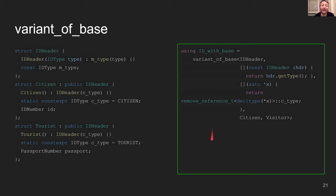There's a question about constexpr lambdas. In C++14, even if you don't explicitly say a lambda is constexpr, it can behave as constexpr. As I mentioned, you don't really have to have a lambda there, but you have to have something that is constexpr.